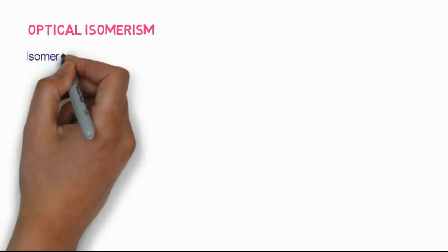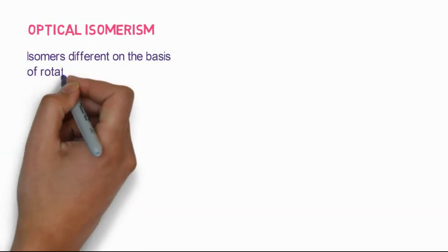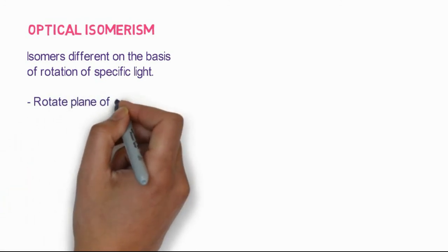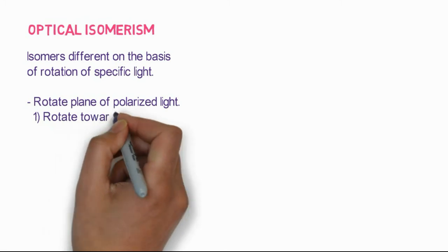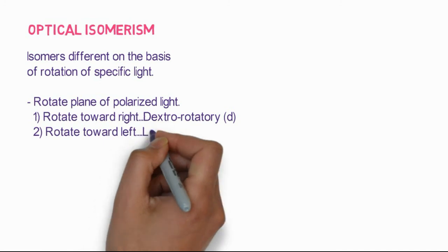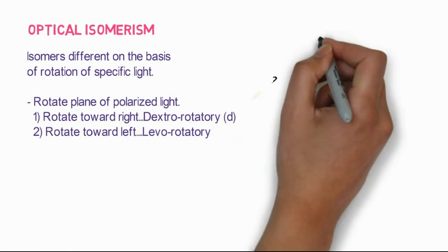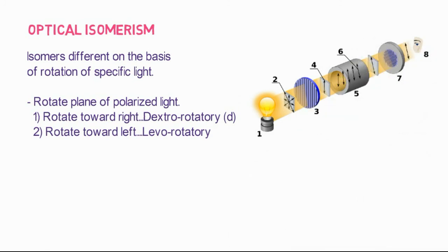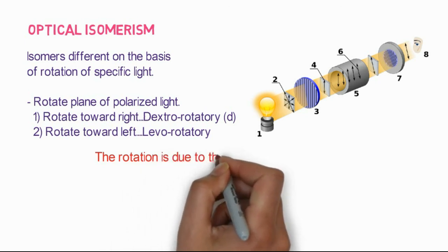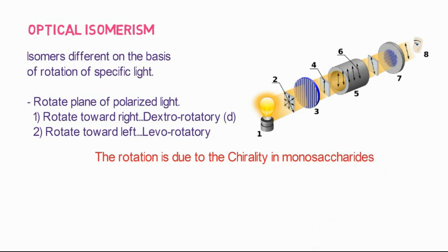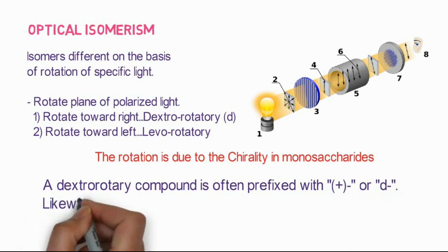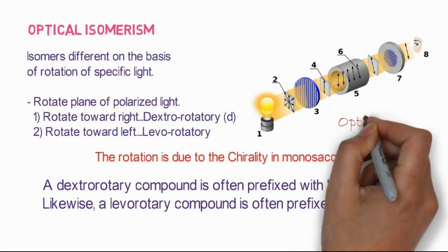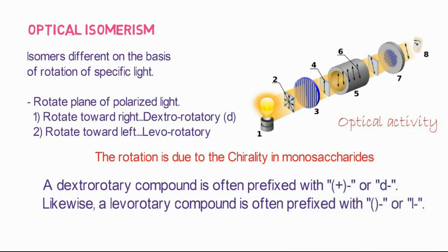The next class is optical isomerism — isomers that differ based on the rotation of plane-polarized light. Optical isomers rotate the plane of polarized light: when they rotate toward the right we call it dextrorotatory, and when they rotate toward the left we call it levorotatory. Light passes through a prism, producing several wavelengths, which are then passed through a monochromator to yield monochromatic light. The rotation is due to chirality in monosaccharides. A dextrorotatory compound is prefixed with plus or small 'd', while a levorotatory compound is prefixed with small 'l' or minus.